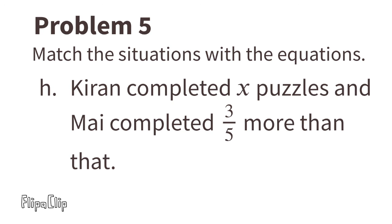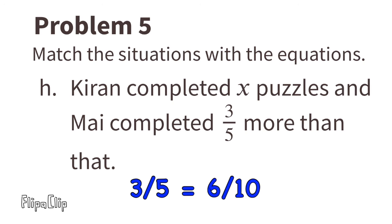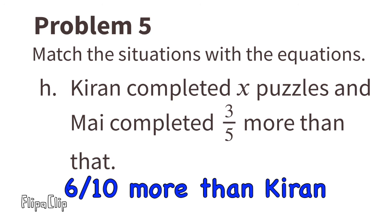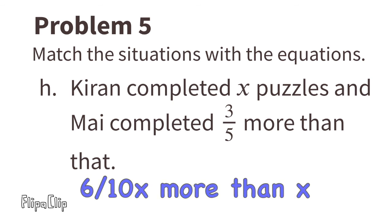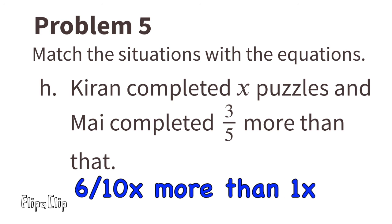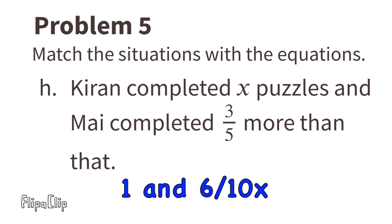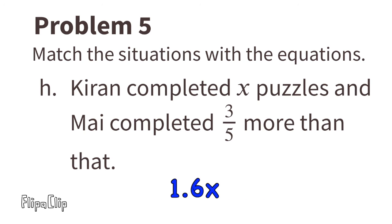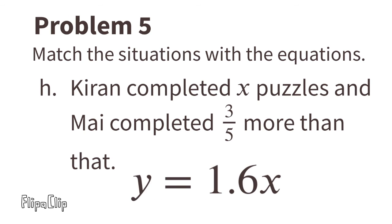Situation H: Kieran completed x puzzles and Mai completed three fifths more than that. Remember, three fifths is equivalent to six tenths. So Mai completed six tenths more than Kieran. Six tenths x more than one x is one and six tenths x, or 1.6x. The matching equation is y equals 1.6x.